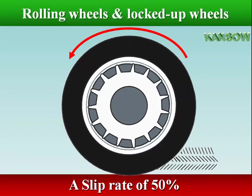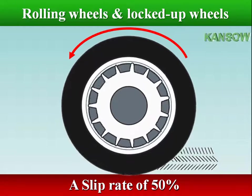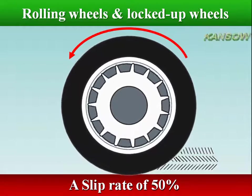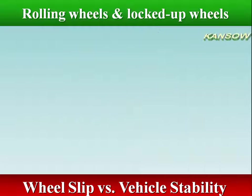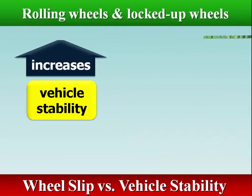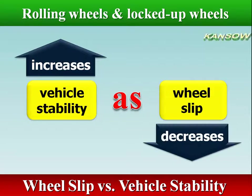A slip rate of 50% means the wheel is rolling 50% slower than a freely rolling tire. Reducing wheel slip improves vehicle stability and control during braking, since stability increases as wheel slip decreases.